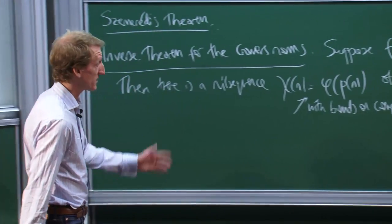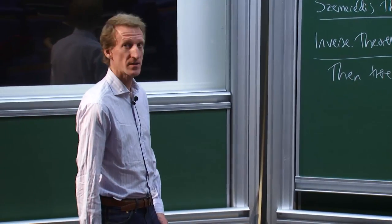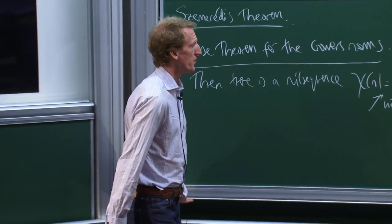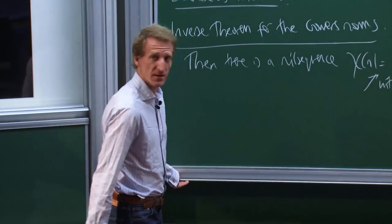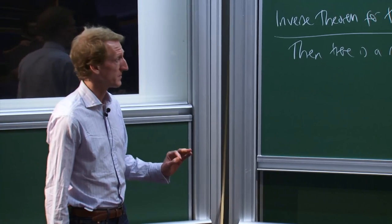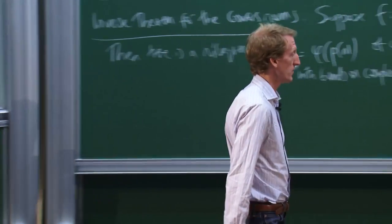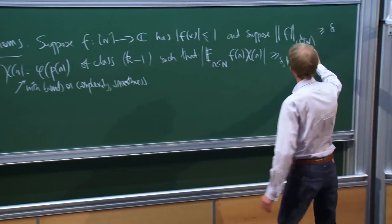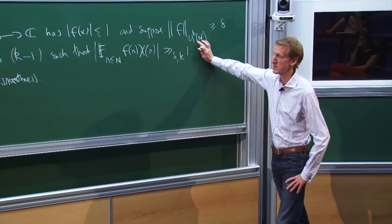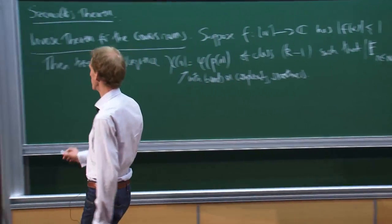I spent a whole hour going over the detailed formulation of this, which requires you also to put some bounds on the complexity and on the smoothness of phi. I've mentioned this many times. It is a very difficult theorem, very long to prove. But I can at least give some ideas of how the proof goes. And in the case K equals 2, this is actually very straightforward.